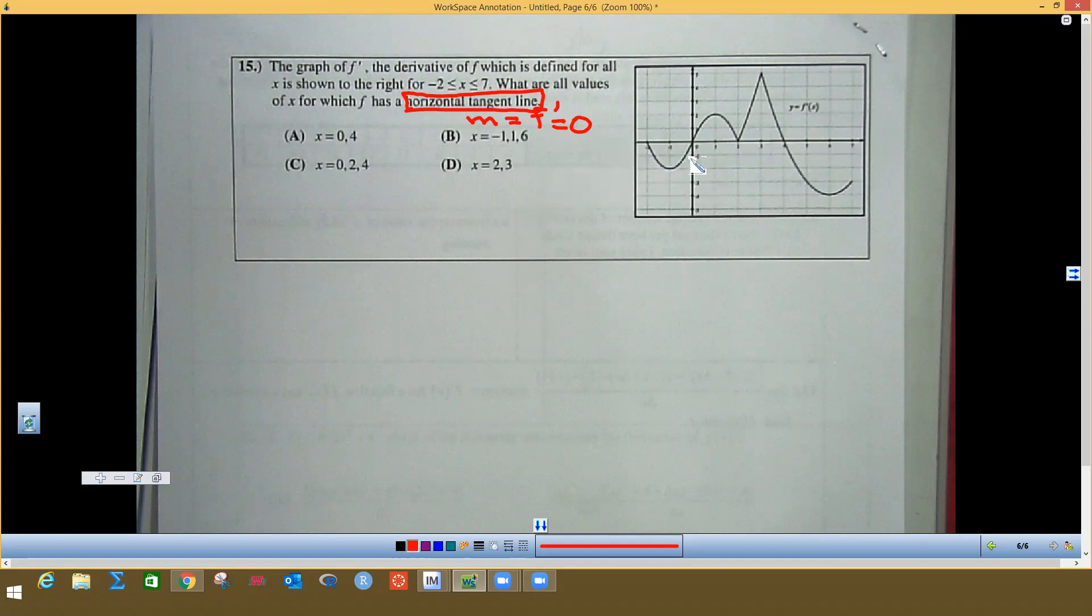in order to be a derivative, you cannot do a derivative at an endpoint. So even though there's a zero here, we can't say this is a horizontal tangent line because the graph, you can't do a derivative at an endpoint. You got to have more than that because it's not a smooth curve, it stops. So this is not a possibility.